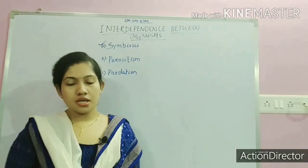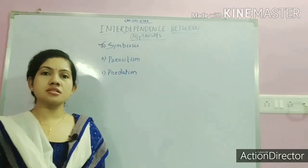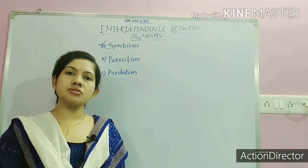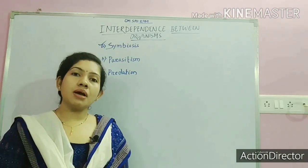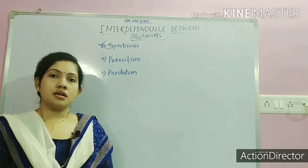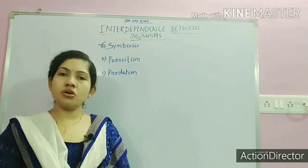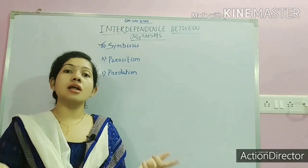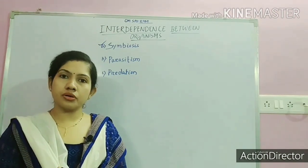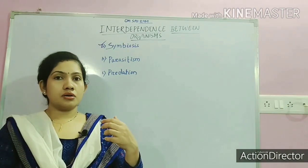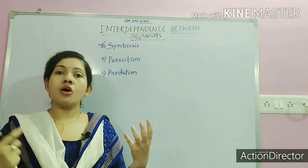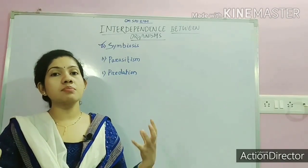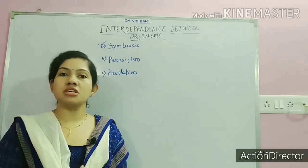The first one we discuss is symbiosis. Symbiosis is a mode of interdependency between organisms where both organisms are mutually benefited — both of them will help each other and both will get benefit from each other.